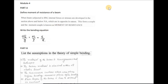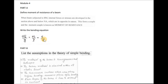Next is the bending equation. The bending equation is: σ/Y = M/I = E/R. Here σ is the bending stress, Y is the distance of the considered layer from the neutral axis, M is the bending moment, I is the moment of inertia, E is the modulus of elasticity, and R is the radius of curvature.